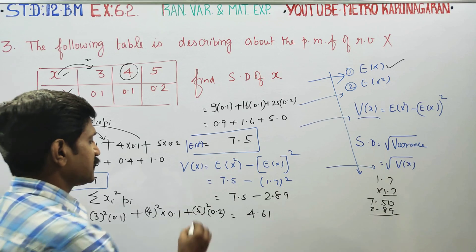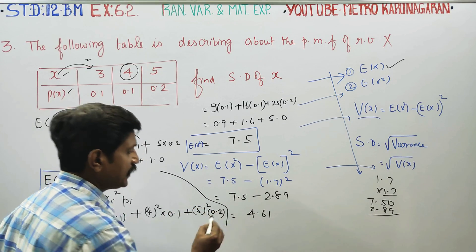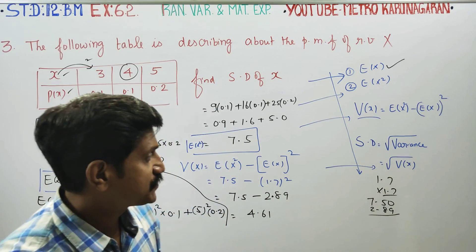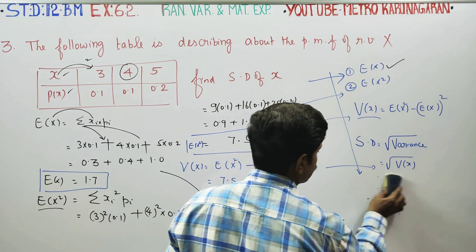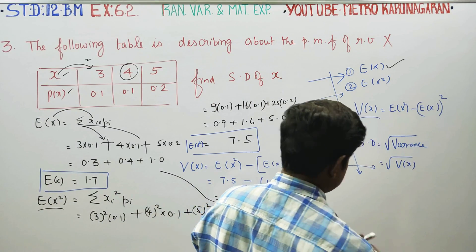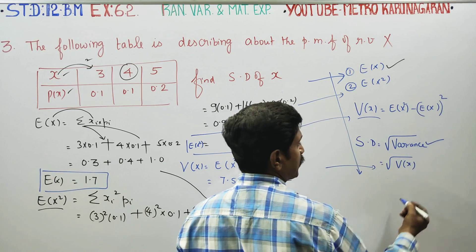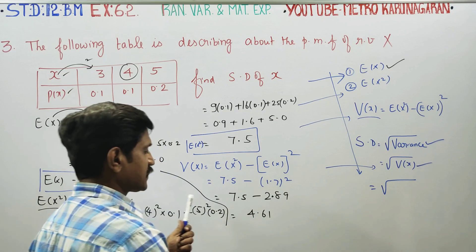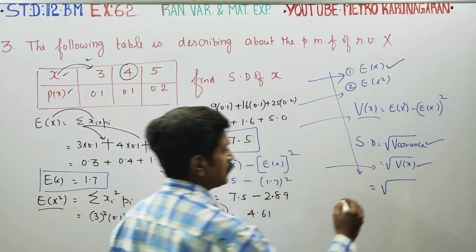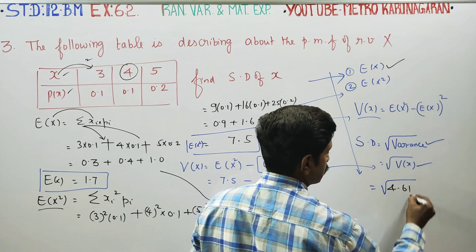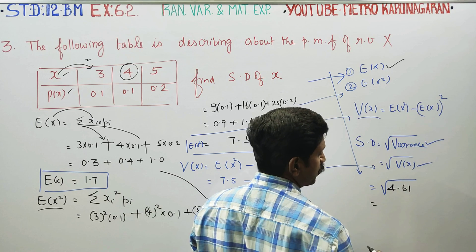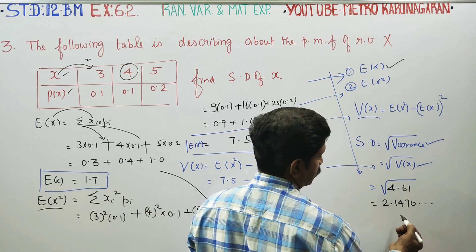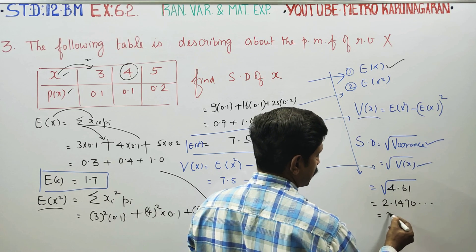V(X) is ready: variance equals 4.61. Standard deviation formula: standard deviation equals square root of variance, so square root of 4.61. Calculating gives approximately 2.17, rounded to 3 digits.